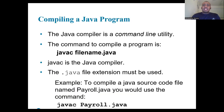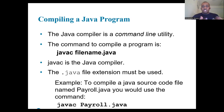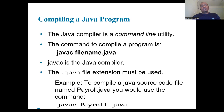When compiling a Java program, it involves using the Java compiler, a command-line utility. The command to compile a Java program is: javac filename.java. For example, to compile a source code file named payroll.java, you would use the command: javac payroll.java.